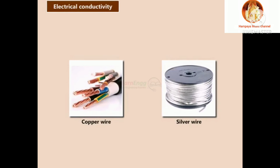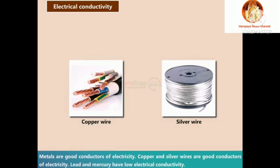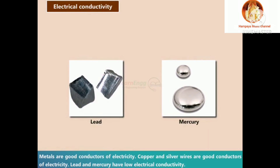Electrical conductivity: Metals are good conductors of electricity. Copper and silver wires are good conductors of electricity. Lead and mercury have low electrical conductivity.